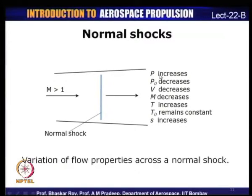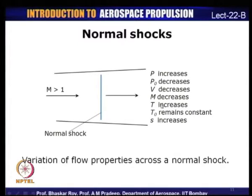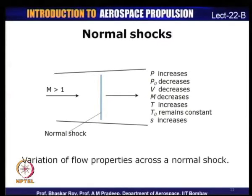To summarize: across a normal shock, the upstream Mach number is supersonic and the downstream Mach number becomes subsonic. There is an increase in static pressure and a decrease in stagnation pressure. Static pressure across a shock increases, stagnation pressure decreases, velocity decreases, Mach number also decreases across a normal shock, and static temperature increases. The only property that remains constant across a normal shock is the stagnation temperature, since there is no heat or work interaction.